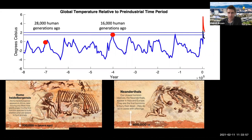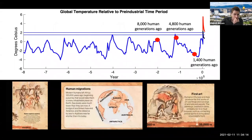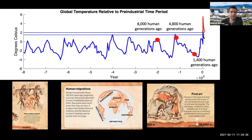16,000 human generations ago, we have first evidence of our split ancestors, the Neanderthals, burying their dead — showing a culture. Homo sapiens sapiens, our actual species, emerges about 8,000 human generations ago, so it's been about 8,000 human generations of actual humans. That's 200,000 years.